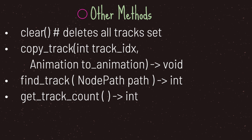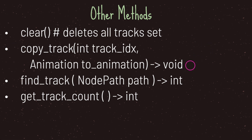Let's go over some other useful methods. The clear method deletes all tracks in your track array. The copy_track method copies a track into an animation type — it returns void since it doesn't return a value. The find_track method takes a node path and searches for it, returning its integer index position. Keep in mind you can only have one node path per track. Lastly, get_track_count returns the total number of tracks in your array.